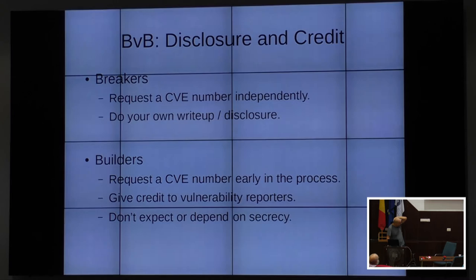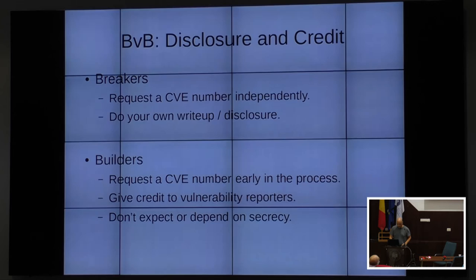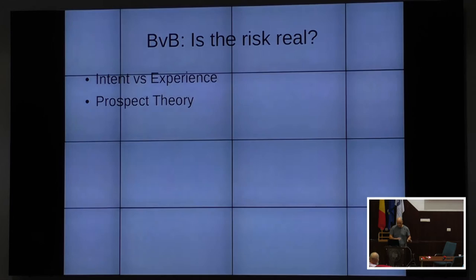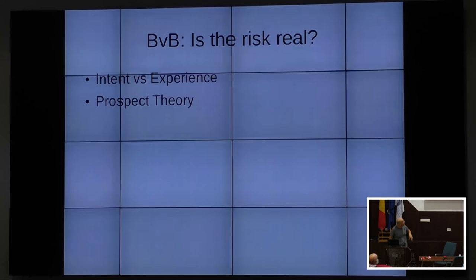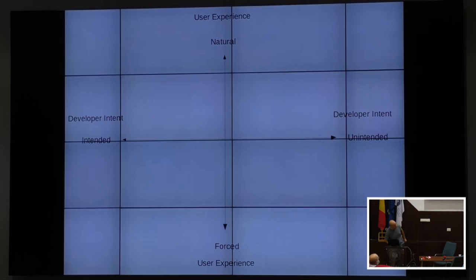Another important point: when you're building software and fixing vulnerabilities, you expect that the secrecy involved in reporting and discussing it will persist afterwards. That's generally not the case. As a breaker, just assume the builder will not handle disclosure correctly, though many do great jobs. You can get a CVE number if they didn't ask for one, and you can do your own write-up totally independent of theirs. If you're writing software, expect that if you don't do these things, the person who found the problem can turn right around and do them for you.